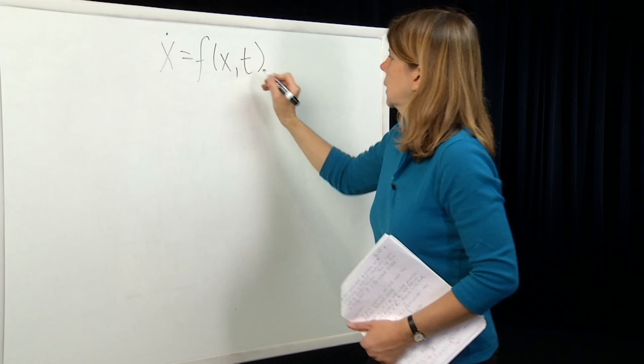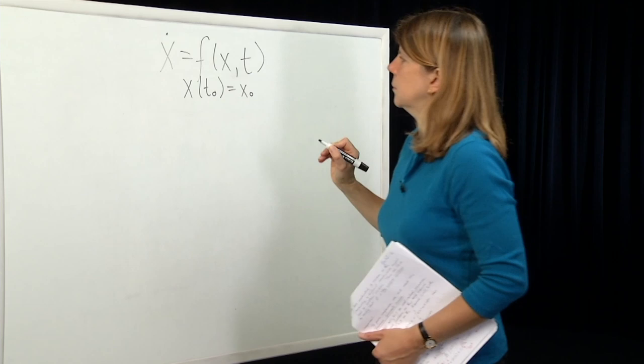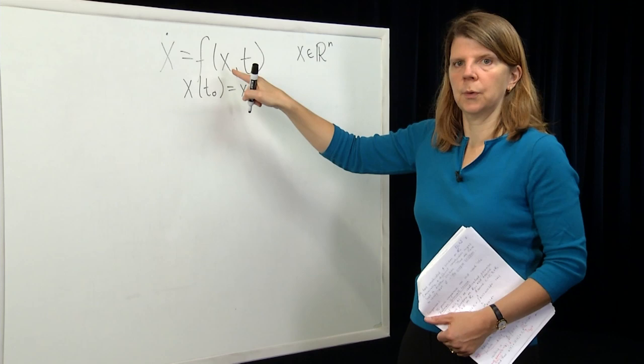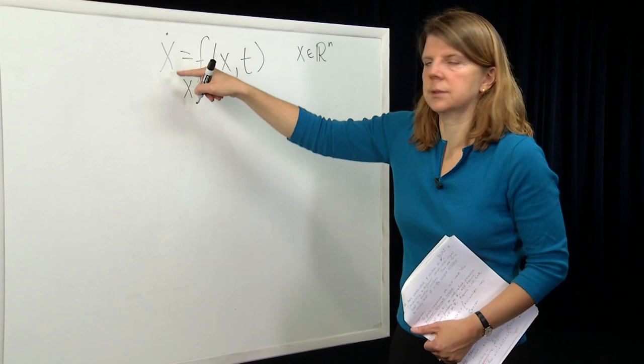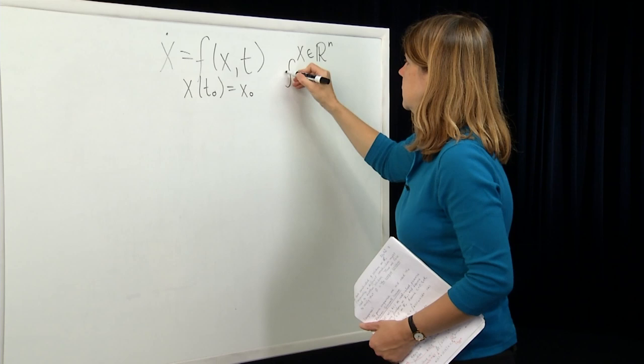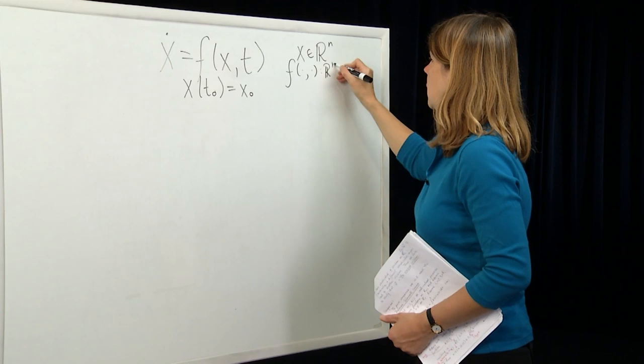Here's our differential equation with some initial condition. X here is a vector — X at a particular point in time is a vector in R^n. So X-dot is also a vector in R^n. F is a vector-valued function, a function which takes R^n cross R+, where time lies in R+, over to R^n.